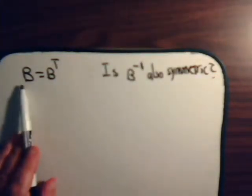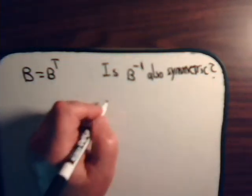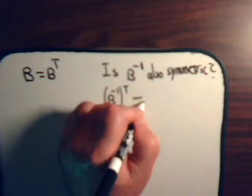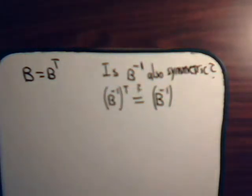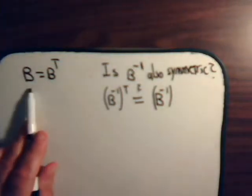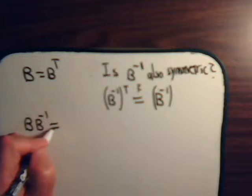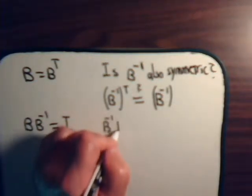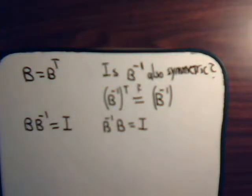So we have a non-singular matrix. It is symmetrical. What about its inverse? Is that also symmetric? That is, does B⁻¹ transposed equal the inverse? Is that true, provided that B equals its transpose? Well, if B is non-singular, we know that B times its inverse is equal to the identity matrix. Let's work with this equation and take the transpose of both sides.